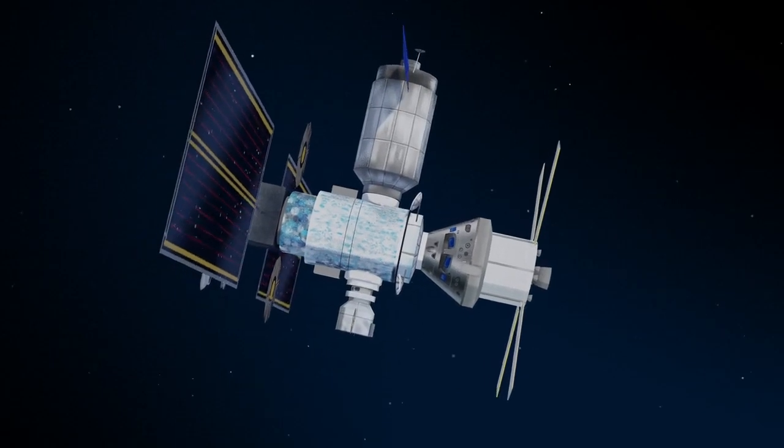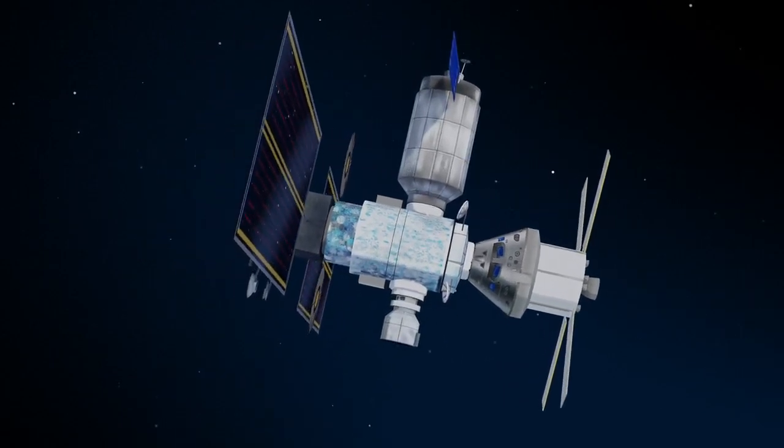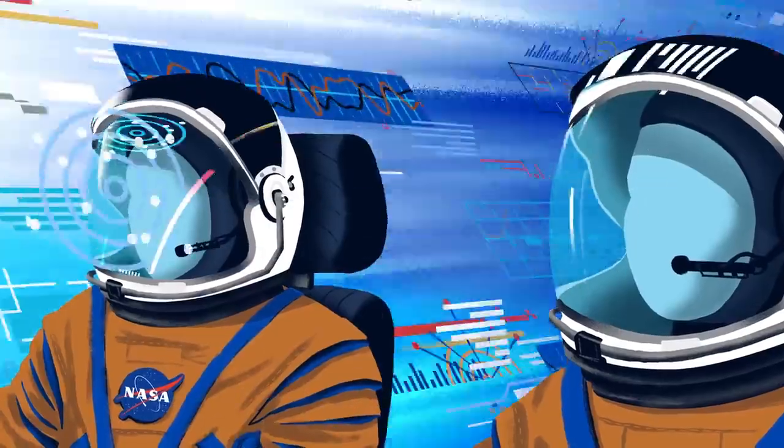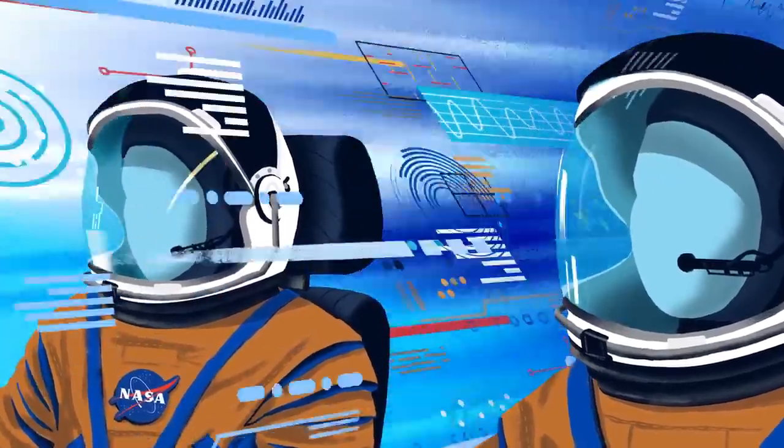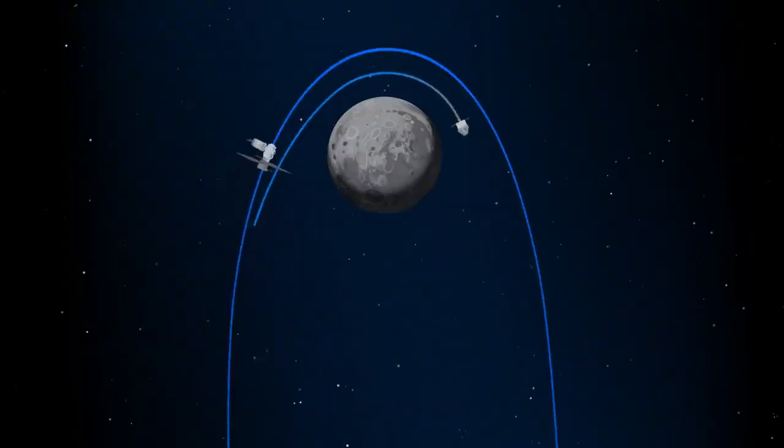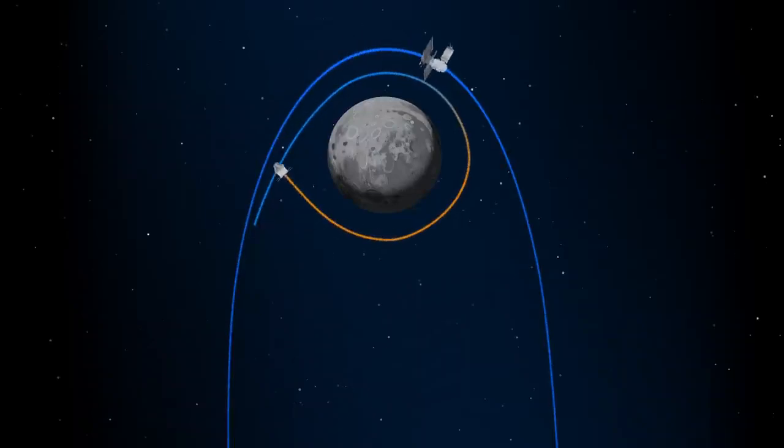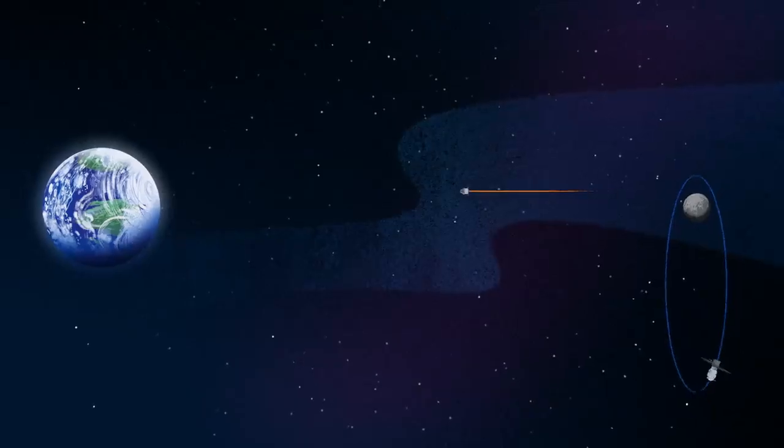Once back aboard the Orion spacecraft and undocked from Gateway, the crew fire their engine once to break out of the halo orbit, and once again to sling the spacecraft around the Moon, placing it on a multi-day trajectory back towards Earth.